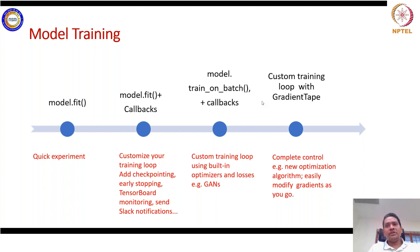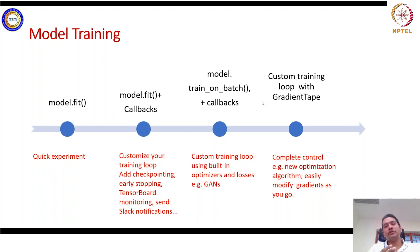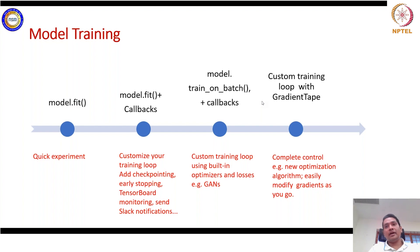With gradient tape, you can customize optimizations, modify gradients, and define your own loss function. For example, if you want to define a cross-entropy loss or a custom loss, you can define that function inside gradient tape so it is accounted for during optimization.